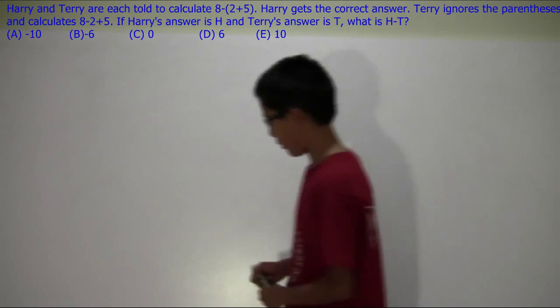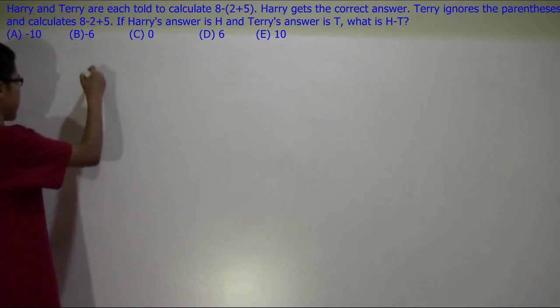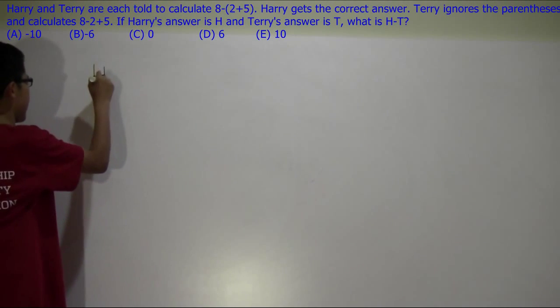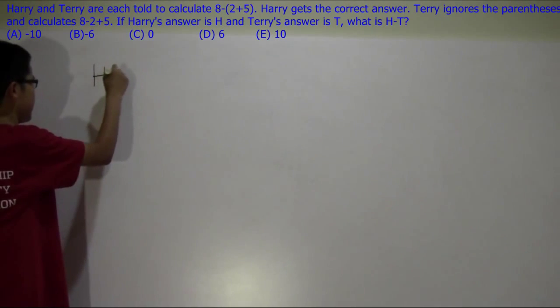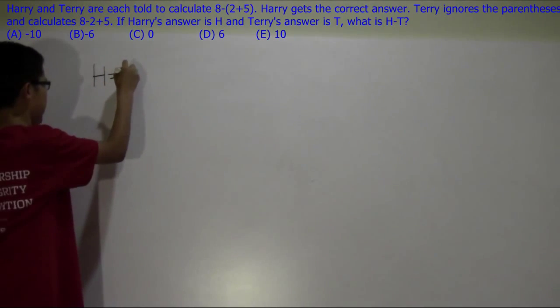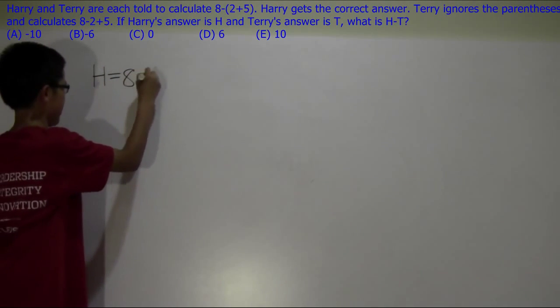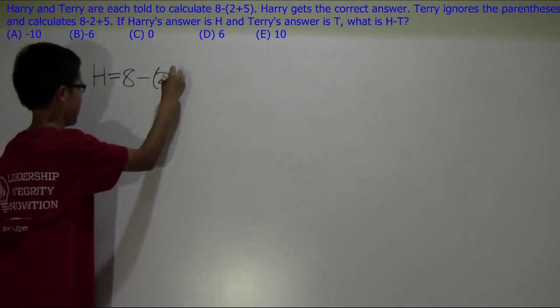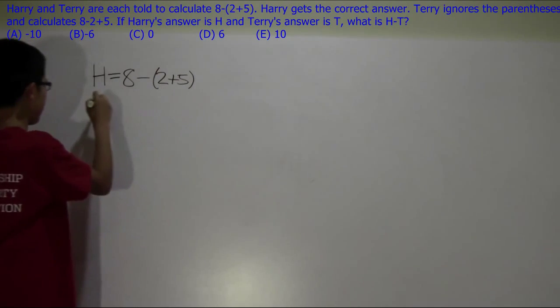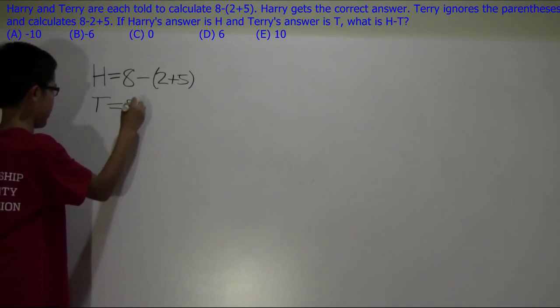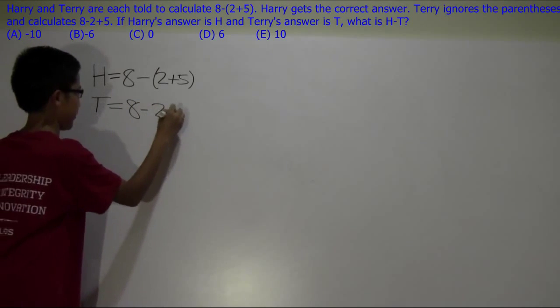Okay, so the problem wants us to calculate h minus t. So we can begin by calculating h and t individually. Terry gets the correct answer, so he calculates 8 minus, in parenthesis, 2 plus 5. But Terry ignores the parenthesis to get 8 minus 2 plus 5.